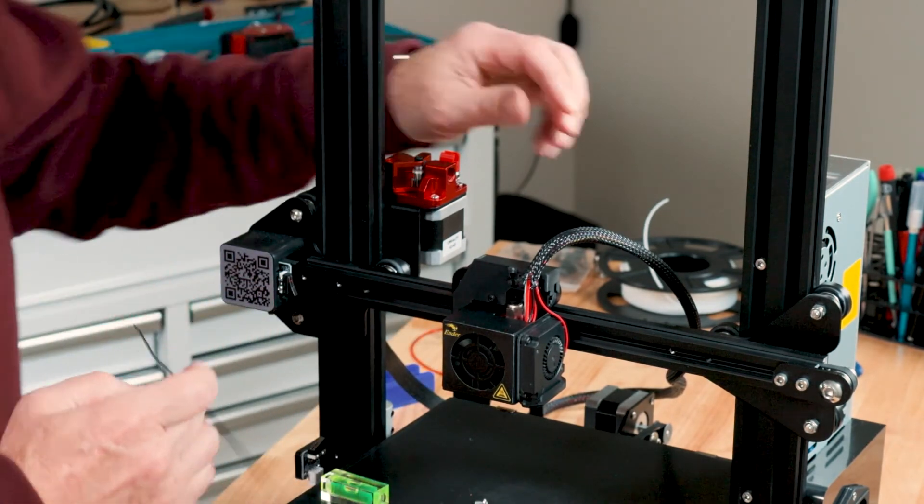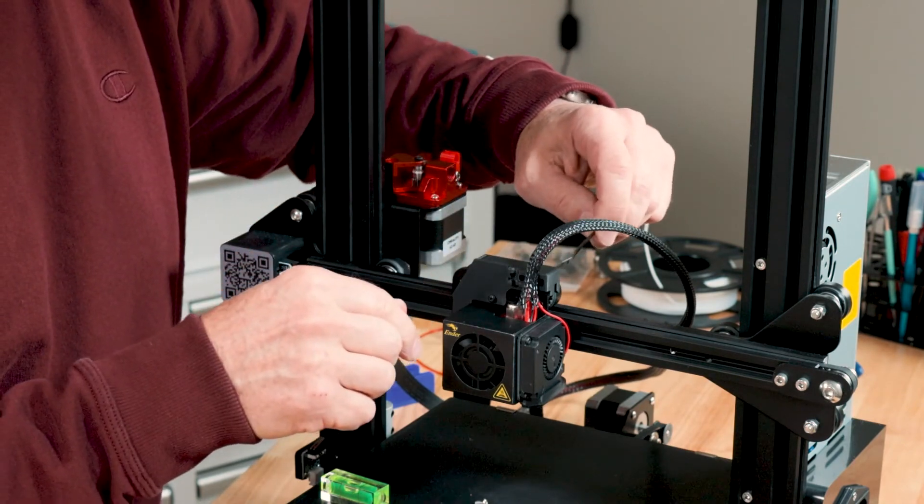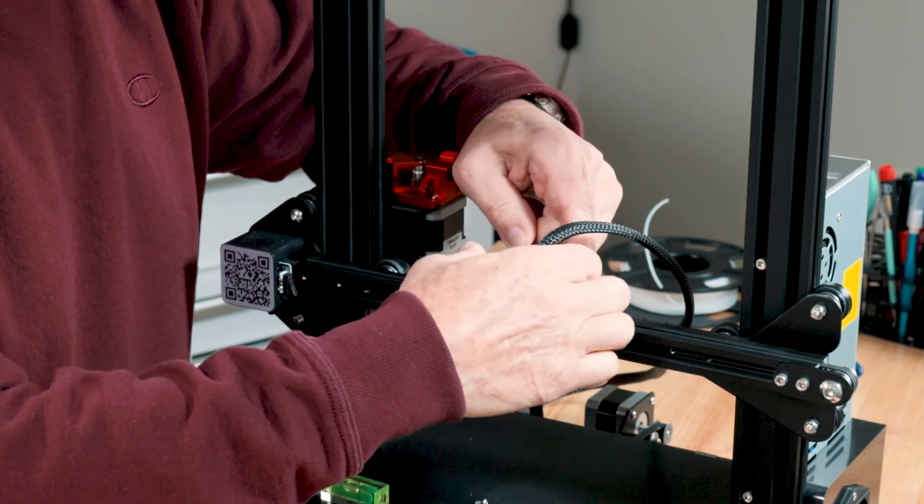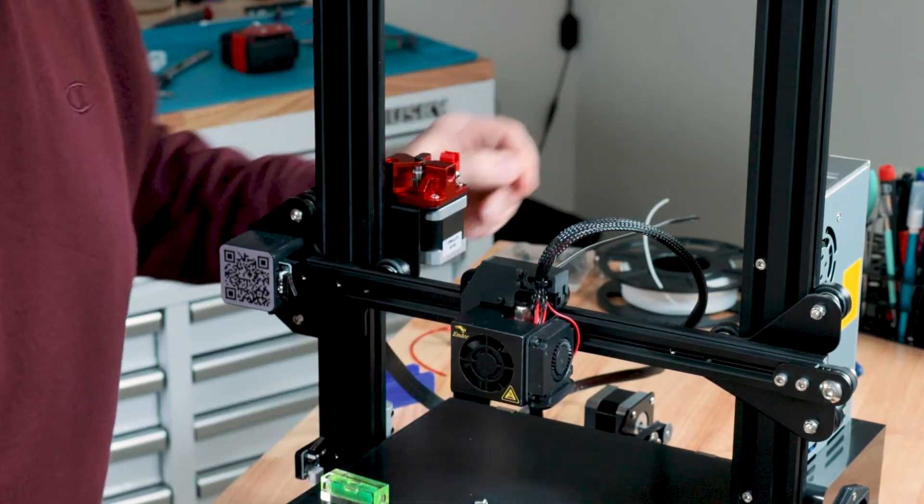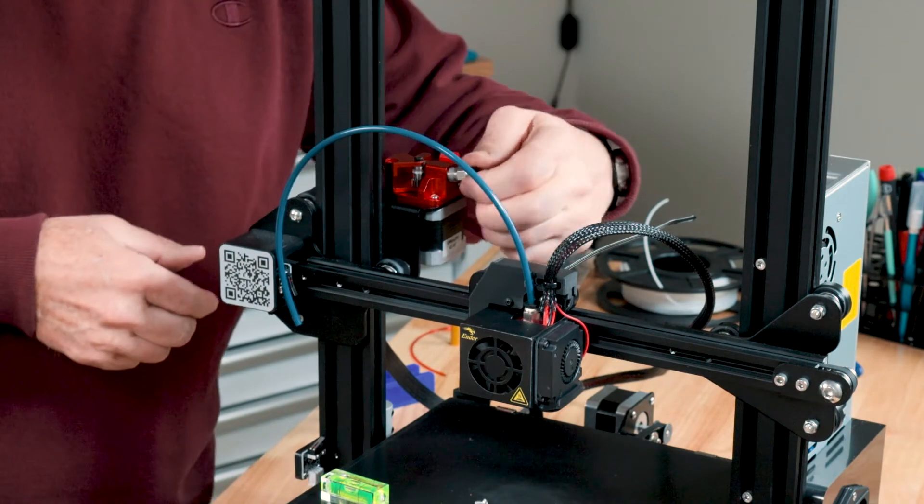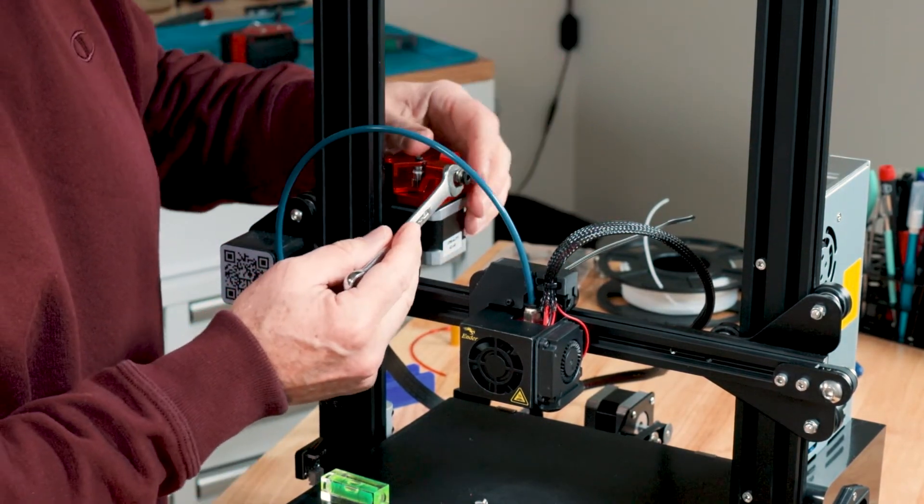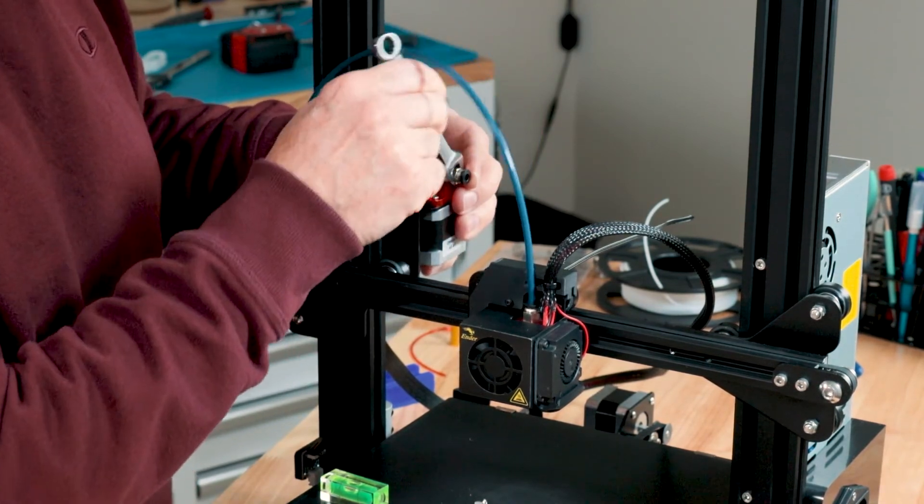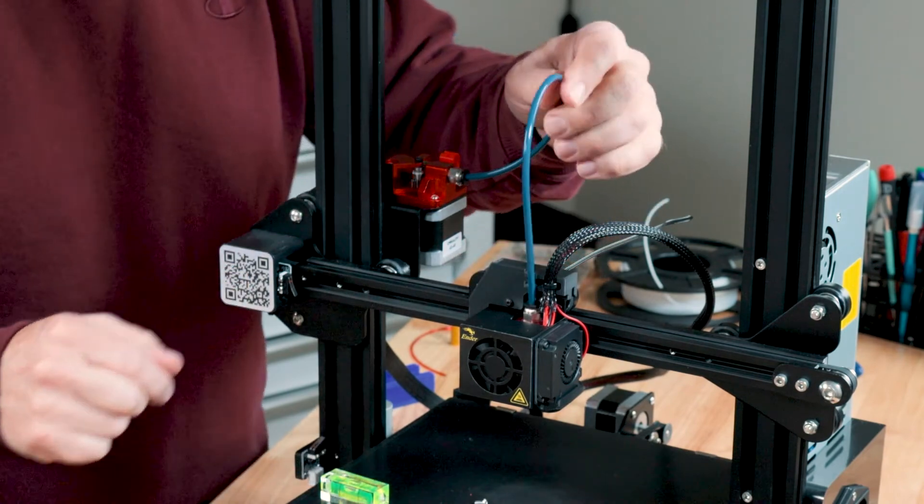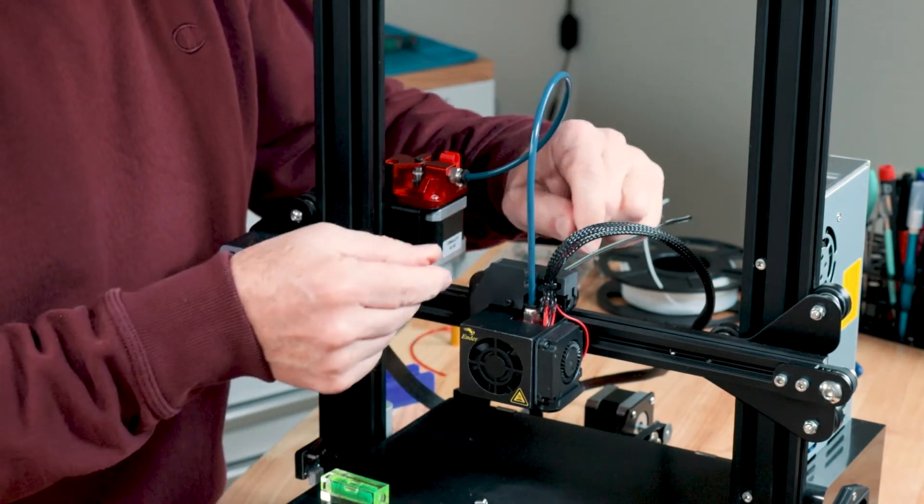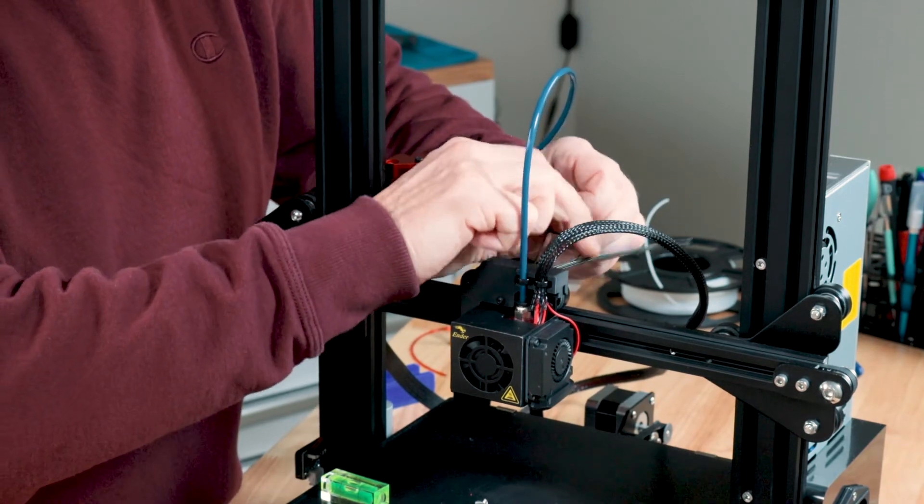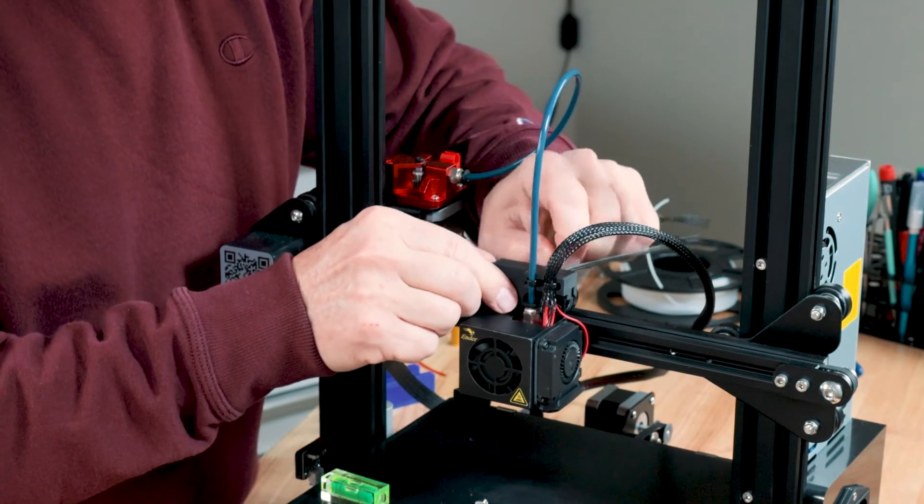Now all you need to do is secure this with a couple of tie wraps. Then you need to install your Bowden tube which is pushed down onto the pneumatic fitting and then we need to put the fitting on the back side here on the extruder and you just want to snug these up snug. You don't want to make them crazy tight and bend the housing itself. So just snug so they're not going to come loose. We'll push that one in. We'll secure the Bowden tube now with a tie wrap.